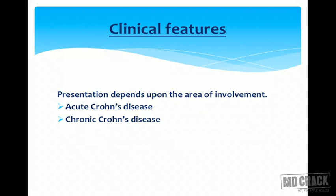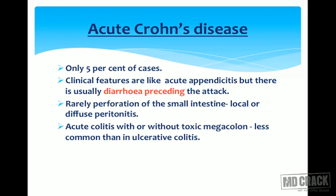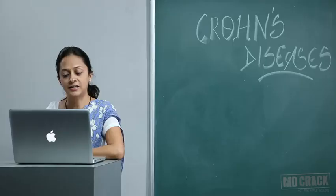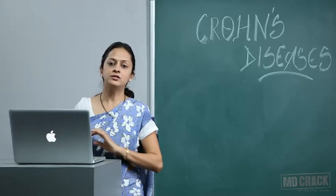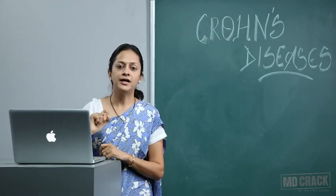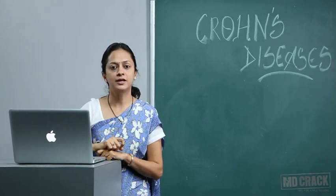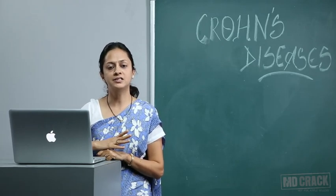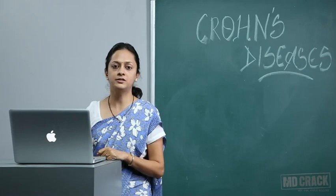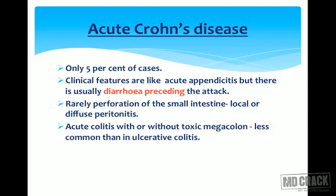Clinical features depend on whether it is acute or chronic Crohn's disease and on the area of involvement. Acute Crohn's disease is seen in only 5% of cases. Clinical features are like acute appendicitis, but there is usually diarrhea preceding the attack — a point commonly asked in exams. Rarely, perforation of the small intestine with local or diffuse peritonitis will be seen.